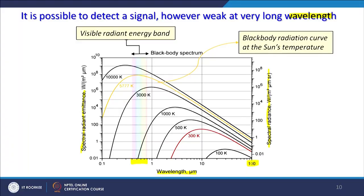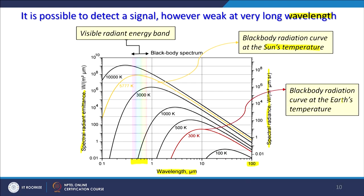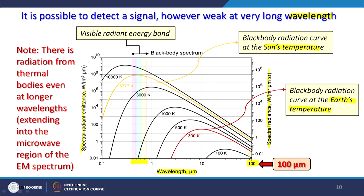Even solar energy or the sun's radiation becomes very small when going towards long wavelengths at the 100 micrometer range. There is radiation from thermal bodies even at longer wavelengths, extending into the microwave region of the EM spectrum. That part of the microwave region is exploited, and the whole thing we call passive microwave.